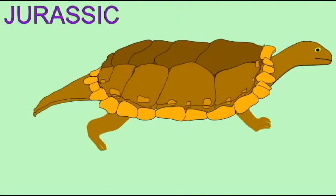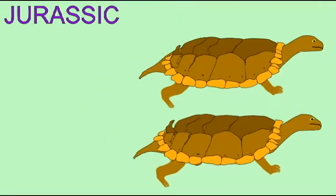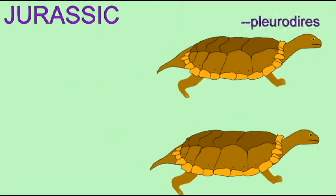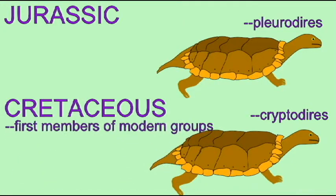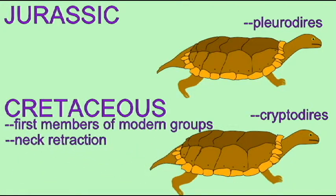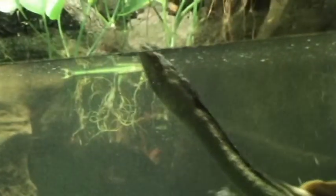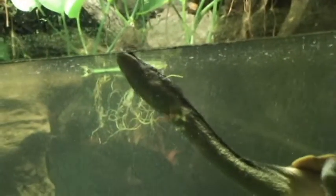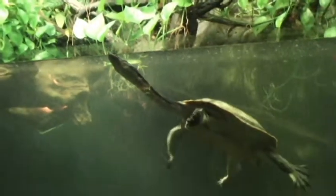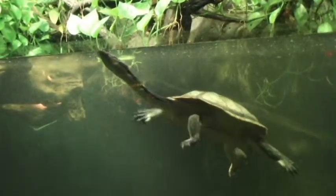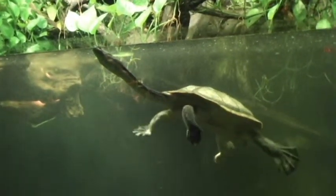Later in the Mesozoic, there are more advanced turtles, but the group which can retract its neck inside its shell — which makes up most turtles today — is known later in the Mesozoic. The more primitive group, which cannot retract its neck, is known first. The more advanced turtles will be found within the later record.